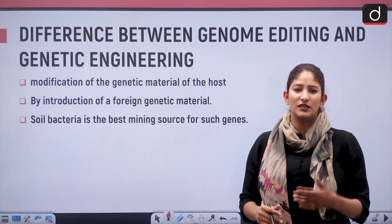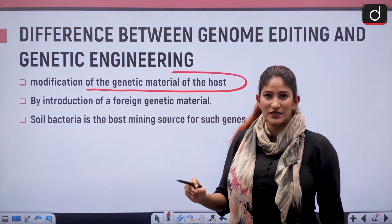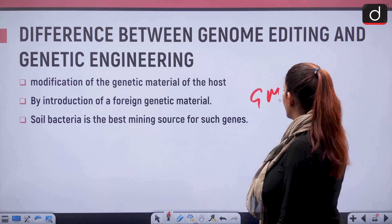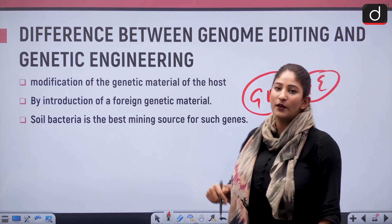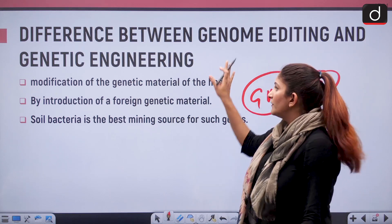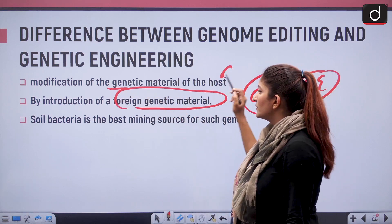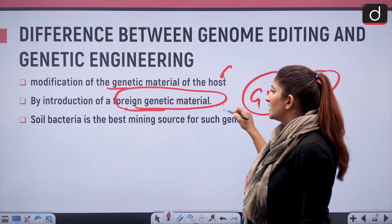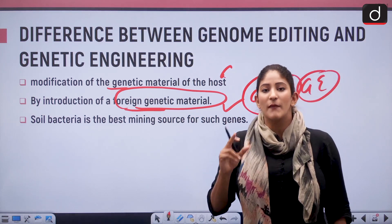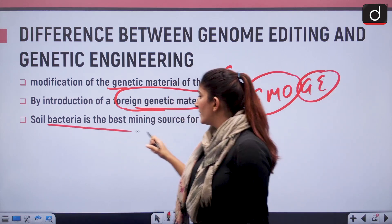The key difference: genetically modified crops involve modification of the genetic material of the host DNA by introduction of foreign genetic material. In GMOs like BT cotton, the best source for mining foreign material to place in the host DNA is foil bacteria, which is the best mining source for such genes.